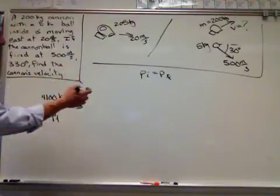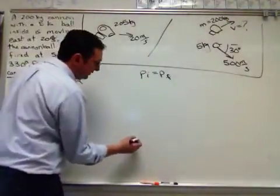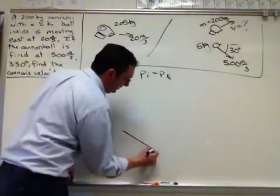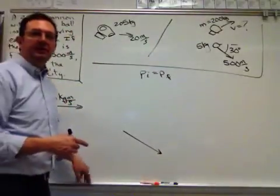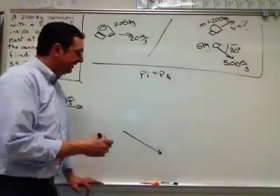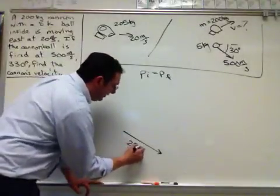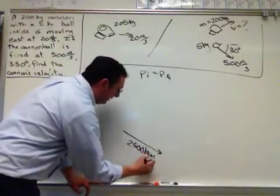So then, afterward, this is before, and afterward you can sketch a triangle which shows that 5 kilograms times 500 meters per second is 2500 kilogram meters per second. 2500 kilogram meters per second.